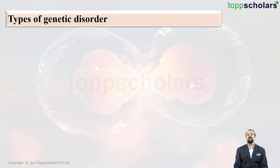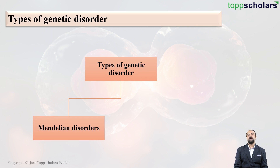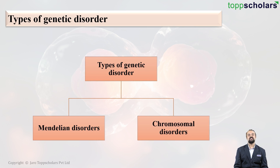Genetic disorders are of two types. We have Mendelian disorders and the second type is chromosomal disorders.